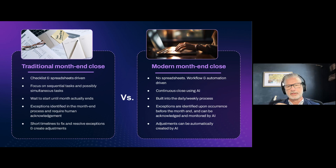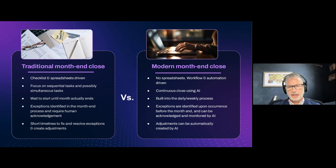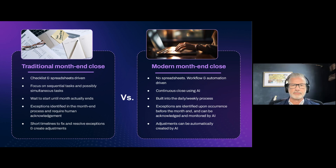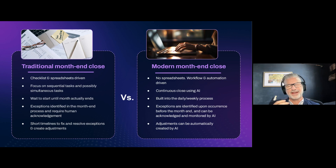When we do see chaos in the closing process, that's when we see employees with dissatisfaction. As leaders and managers, we should think about the things that create chaos in our organizations because that can be stressful for employees. In the modern month-end close, we see fewer spreadsheets and more automated workflows. The checklist is still there but in a different form — it's more of an automated deal where we're prompted for certain things and the workflow controls how the process proceeds through the month-end close. We also see AI doing a lot of continuous reconciliation throughout the month as we transact.